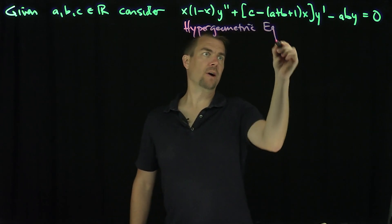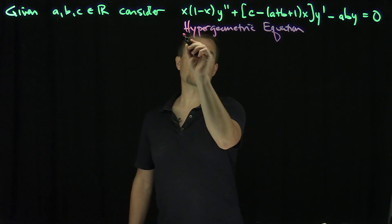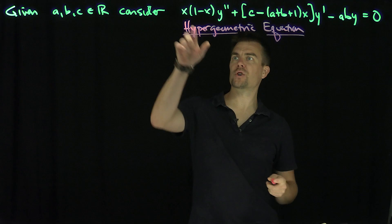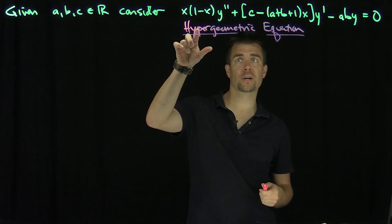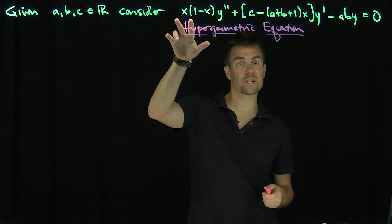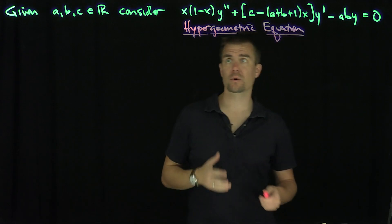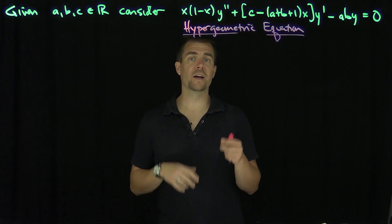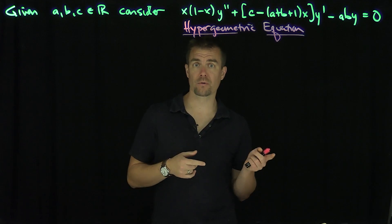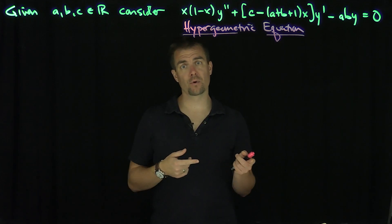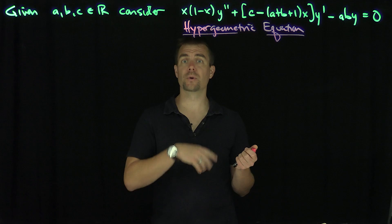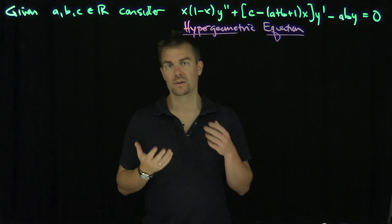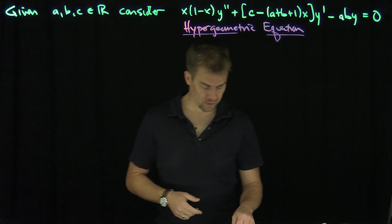This equation arises in the study of second order differential equations that have exactly three regular singular points. It's clear that 0 and 1 are regular singular points, since we have quadratic and linear expressions in the coefficients. Furthermore, if we change variables from x to 1 over zeta, then zeta equals 0 will be a regular singular point, so infinity is the third regular singular point. This is sometimes referred to as the 0, 1, infinity singular point collection.